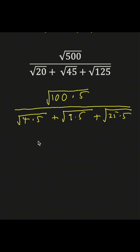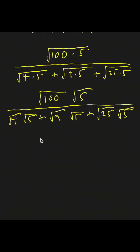Next, we can write each number under its own radical sign. Now observe that the square root of 100 is 10, the square root of 4 is 2, the square root of 9 is 3, and the square root of 25 is 5.